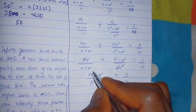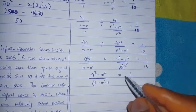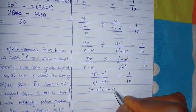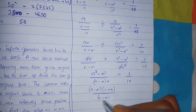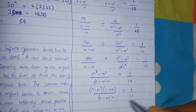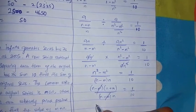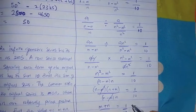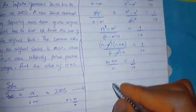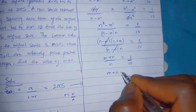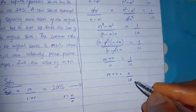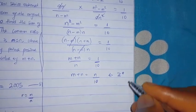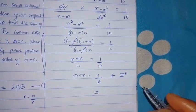After cancellation, I have (N plus M) over N equals 1/10. Since the question asks for the value of m plus n, I can say m plus n equals N/10 by cross-multiplying. Since all elements are positive integers, this is the final answer.